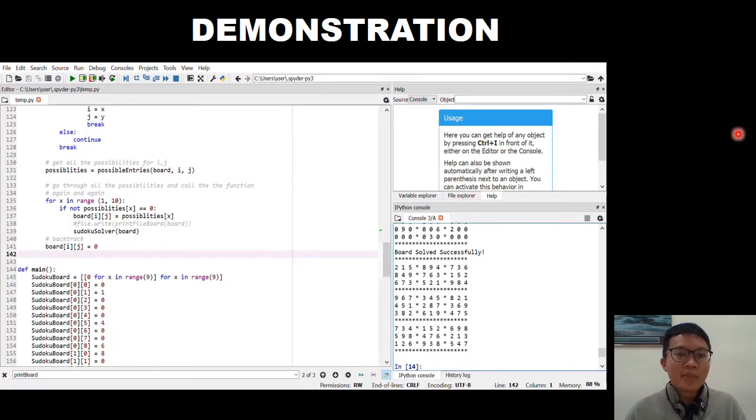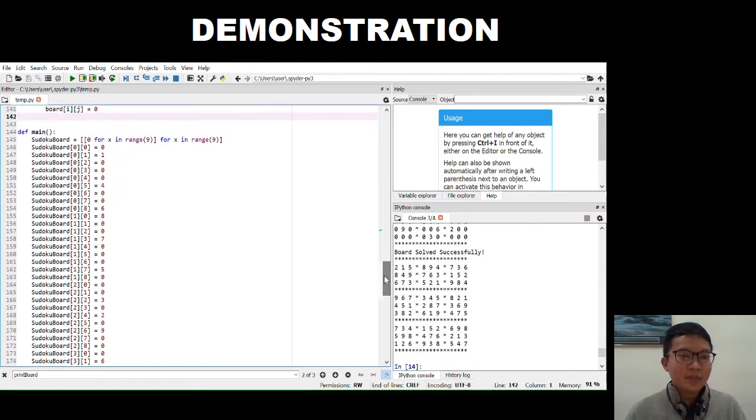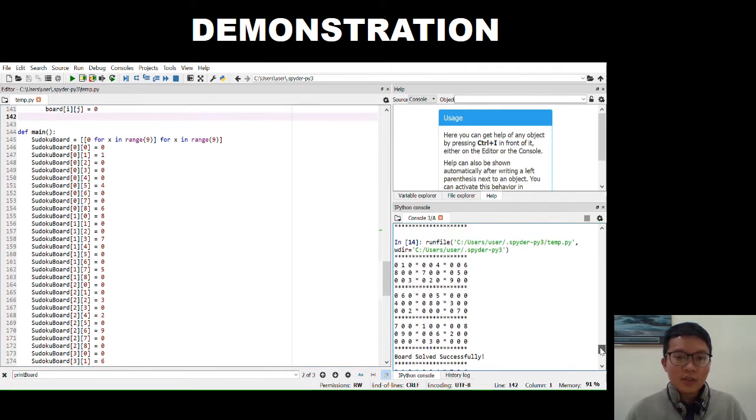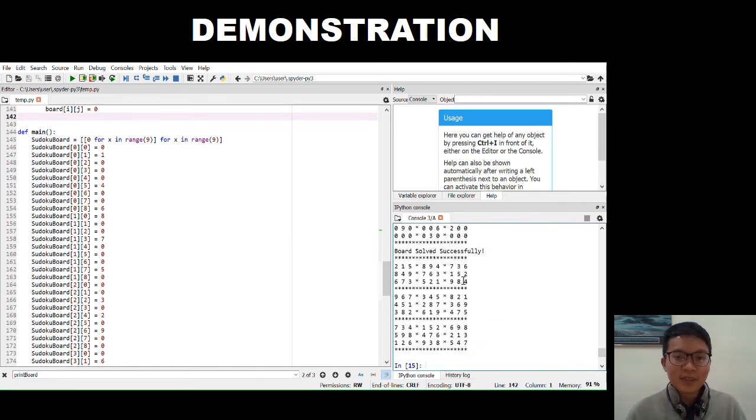Now I will run a simple demonstration on Spider using Python. You can put your Sudoku question in the main area. 0 is the vacant spot. Then we run the code. Okay, you can see in the terminal the question is displayed. The 0 is vacant spot as I mentioned previously, and the board is solved successfully. Yeah, it's all filled up. This process only takes about few seconds. It's a pretty fast process.